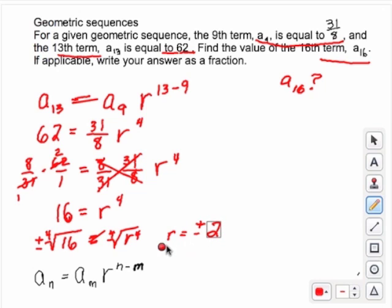So we're going to need this value, and we're going to then basically use our formula again, but plug in the information so we can find a sub 16. So a sub 16 equals, so we're going to use either a sub 9 or a sub 13. And I'm going to use a sub 13 because it's not a fraction. And no other reason than that.